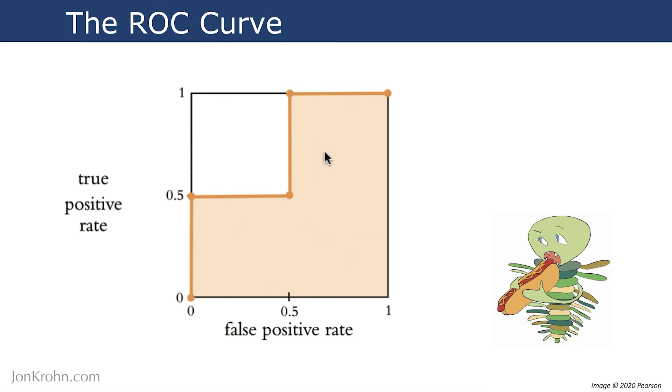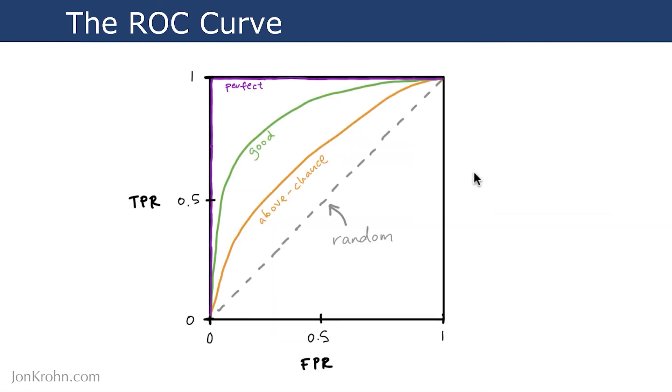Now, is 0.75 good? Well, here's a quick guide. So we'd expect an area under the curve of 0.5 by chance. So if you just randomly guess with a binary classifier, you should get random performance. And that corresponds to an area under the curve of 0.5, a curve that follows right along this diagonal here.